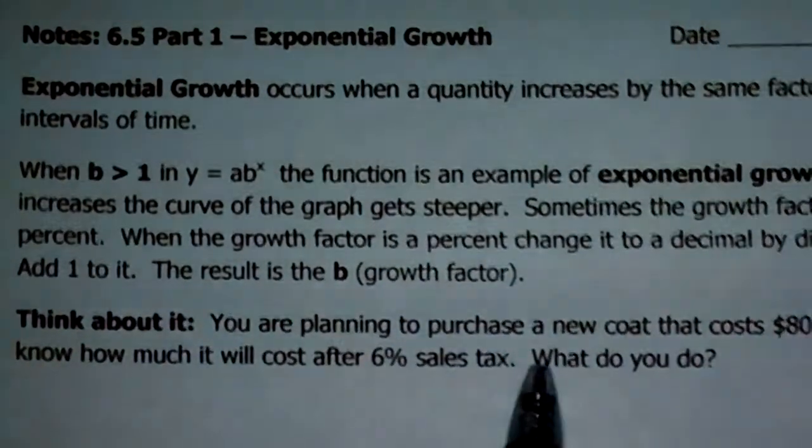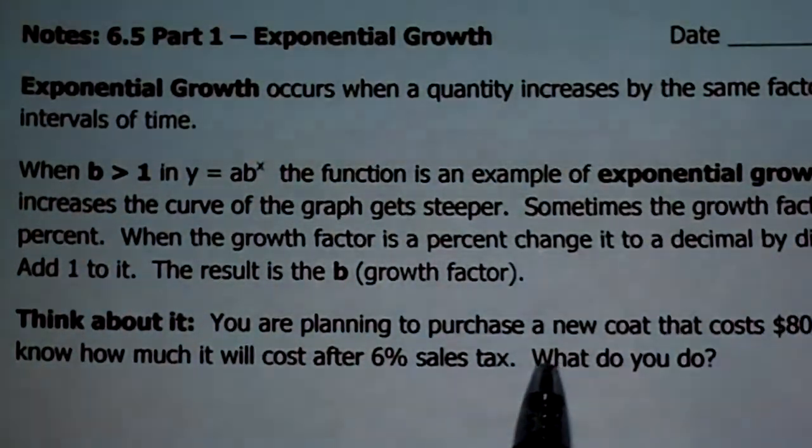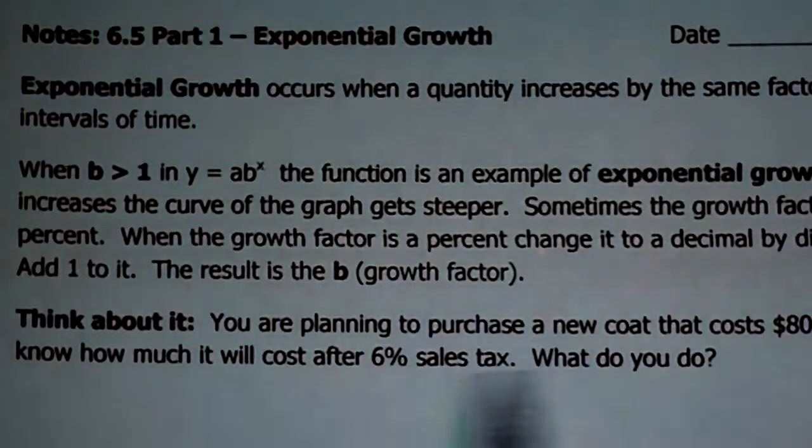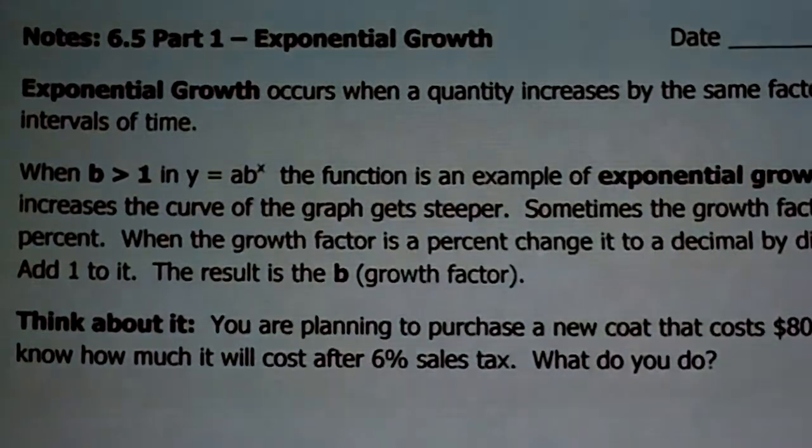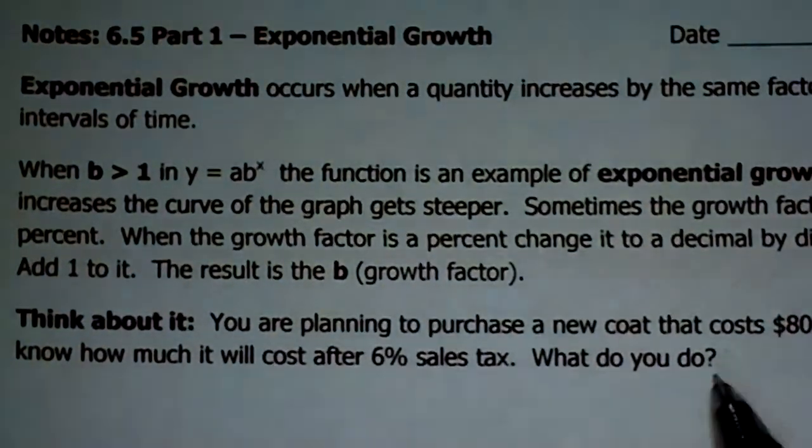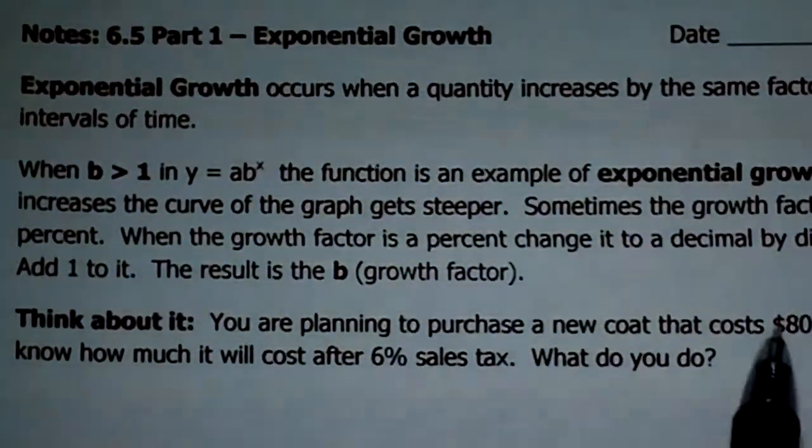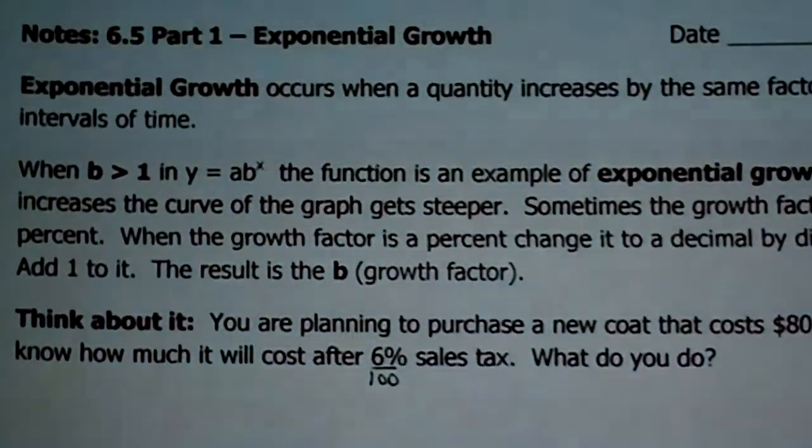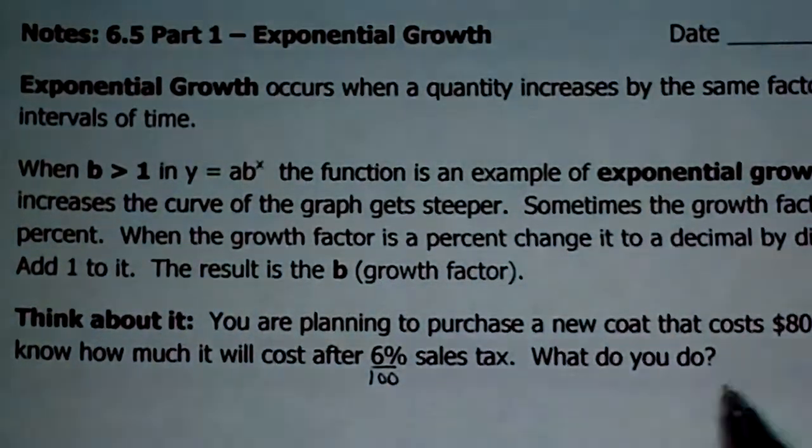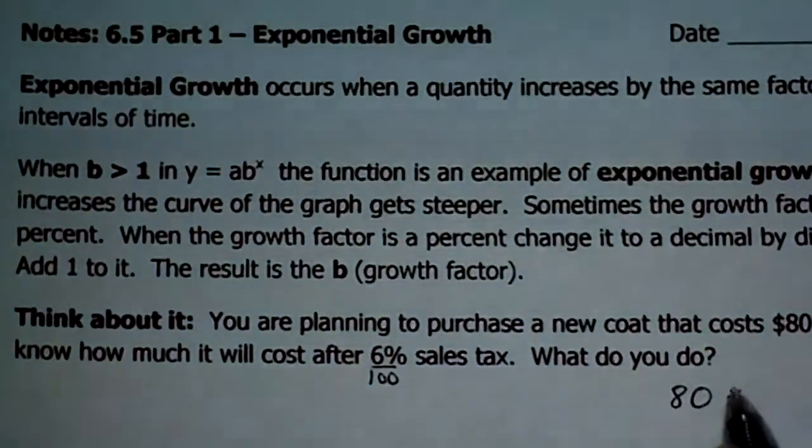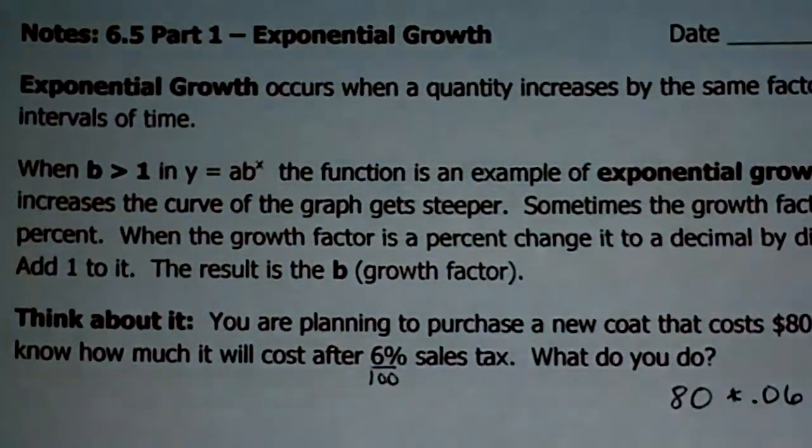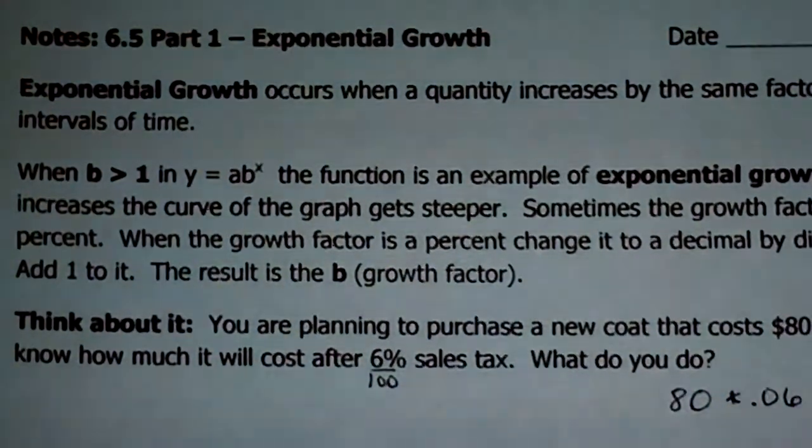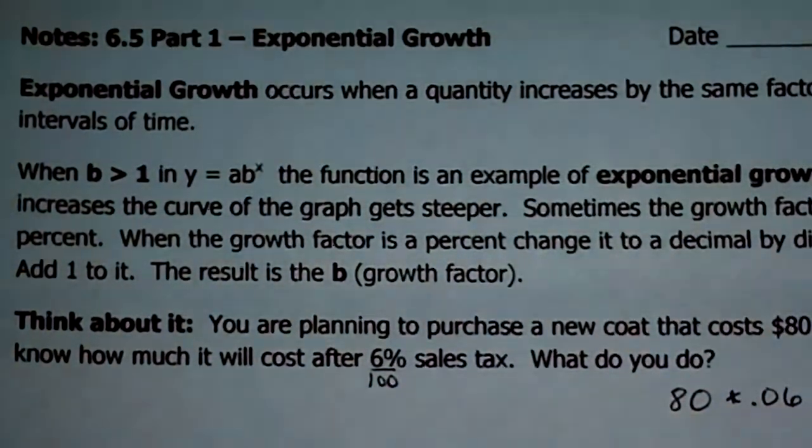I think this sales tax example really helps it become clear. So let's say you're going to buy a new coat. This new coat's $80, and you need to know, okay, how much money do I need because I have to pay sales tax? What do you do? Well, I know a lot of you would say, okay, well, I need to know what 6% of 80 is. So you take the 6%, you change it to a decimal by dividing it by 100, and you would take 80 times 0.06, and when you do that, you get $4.80. Okay?